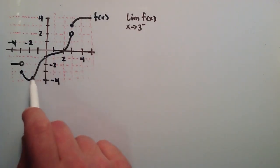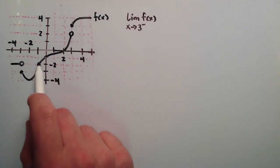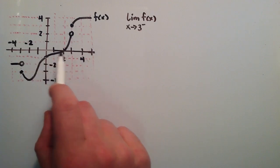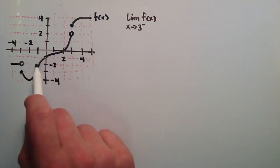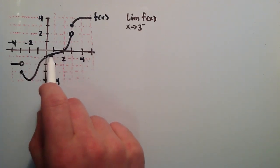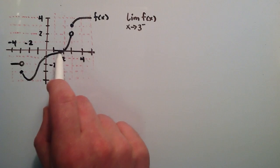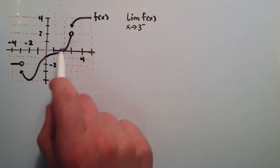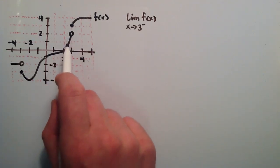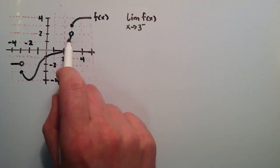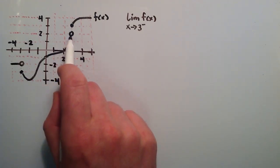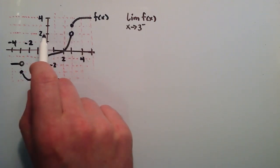As we're approaching x equals 3 from the left — this is x equals 3 here — approaching it from the left, if this is all we're looking at, it looks like as we get close to x equals 3, f of 3 is going to give us the value 2.